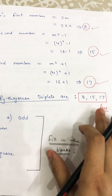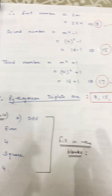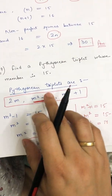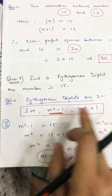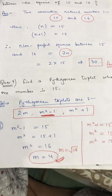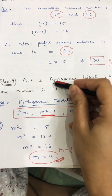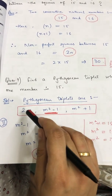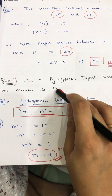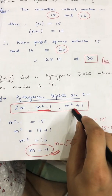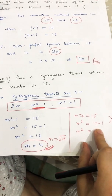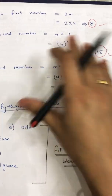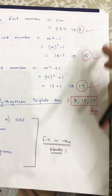To summarize the method: find the value of m, then substitute it into all three terms (2m, m²−1, m²+1) to get the three numbers forming the Pythagorean triplet. Always check first if the given member is a multiple of 2 — if yes, equate with 2m; if no, compare with m²−1 or m²+1, ensuring the right-hand side is a perfect square before proceeding.